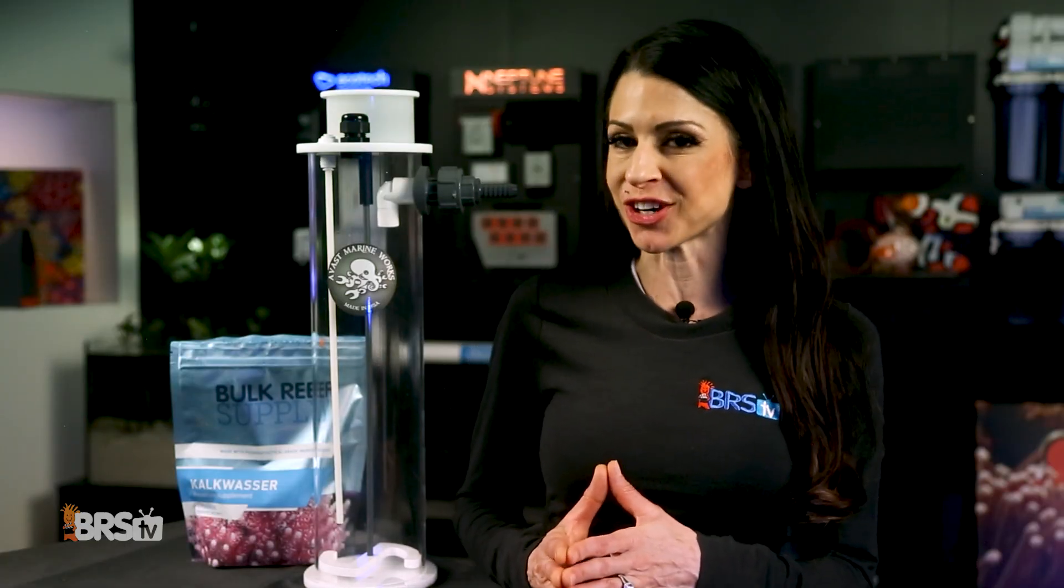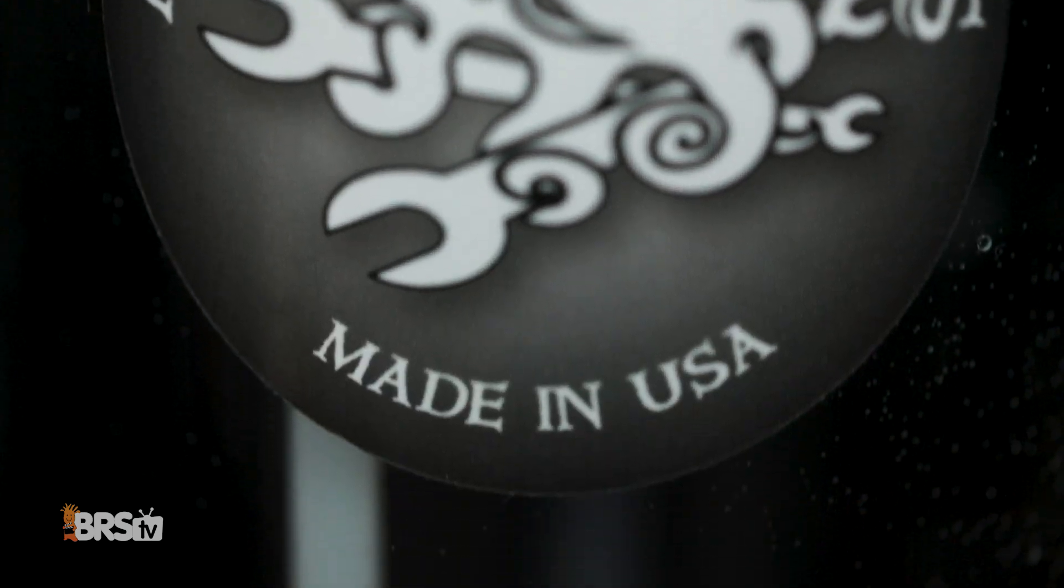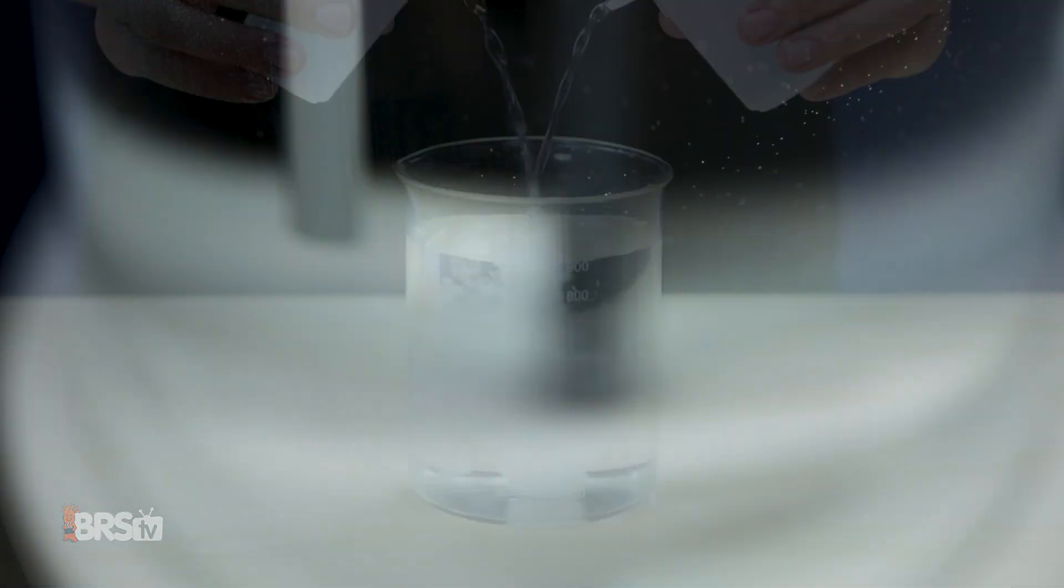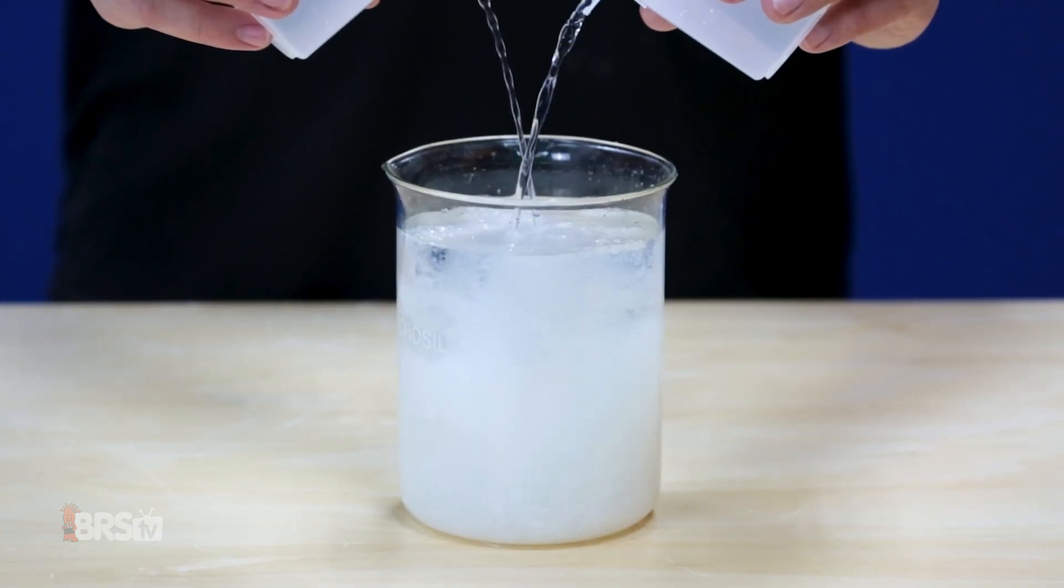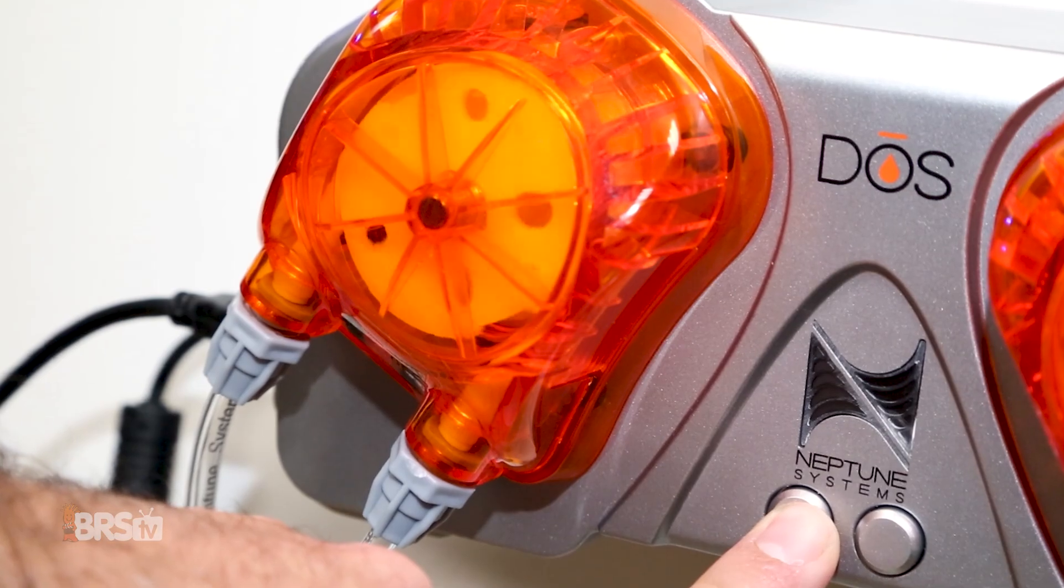A couple added bonuses of dosing calc with the Avast Marine stirrer. Number one, accuracy and simplicity. Unlike dosing two-part, dosing a single solution for alk and calcium is much easier than dosing two. Why? With two-part you run the risk of precipitation when the alk and calcium meet and a big bonus, you only need one dosing pump.